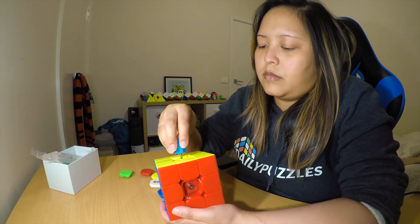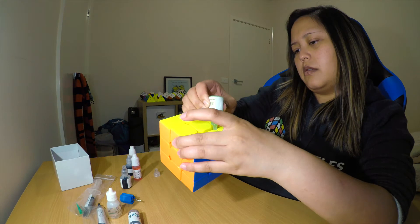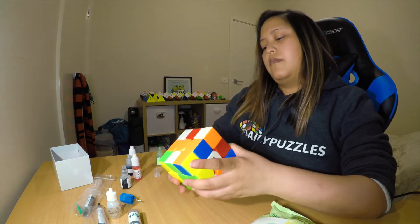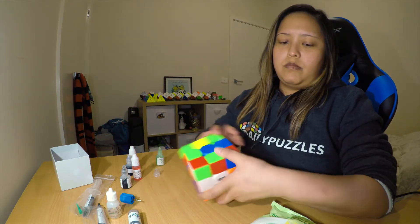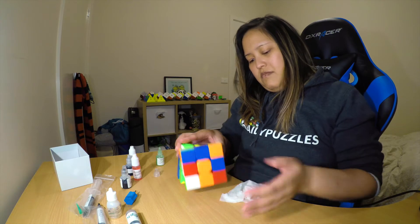Here I'm tensioning the cube so it's not too tight and adding some additional silk and mystic to make sure my puzzle is nice and smooth and plush. And then I got lube on the outside so I had to wipe it down.